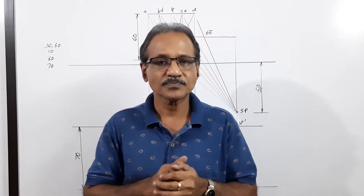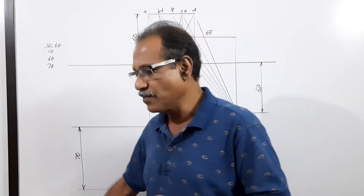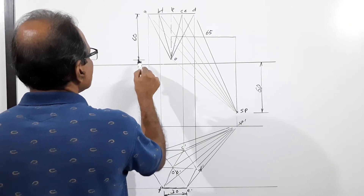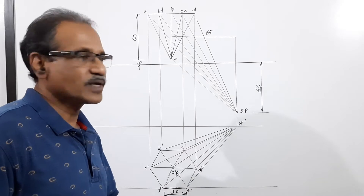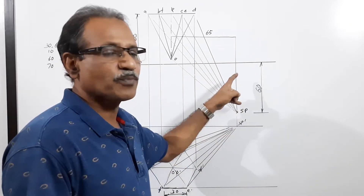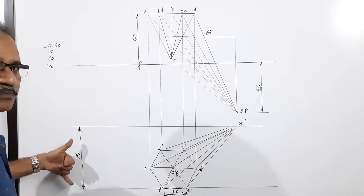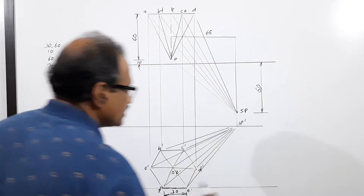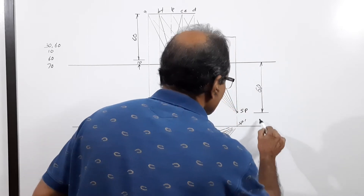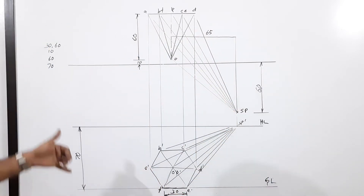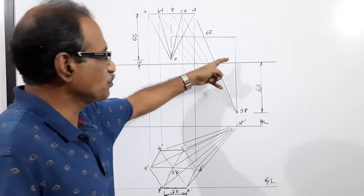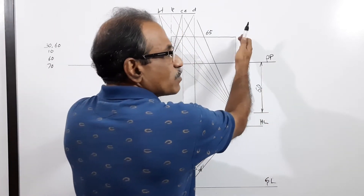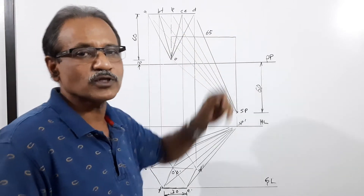The apex is 10 millimeters behind the picture plane. The station point is 60 mm in front of PP and 70 mm above the ground — that is the HL-GL height of 70 mm. The center plane is 65 mm to the right of the axis.